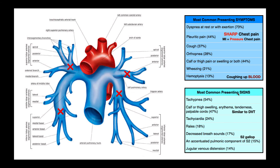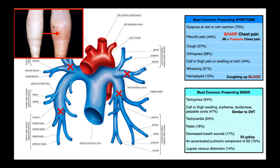For the commonly presenting signs, tachypnea — an elevated respiratory rate — is the most common sign that a person has a pulmonary embolism. We also have calf or thigh swelling, erythema (redness), tenderness or pain, and palpable cords — these are essentially symptoms of a deep vein thrombosis. Here's an example of calf swelling and erythema, which looks like a deep vein thrombosis.